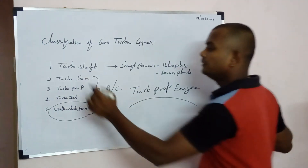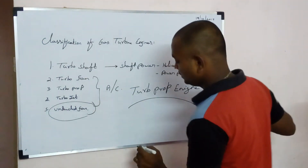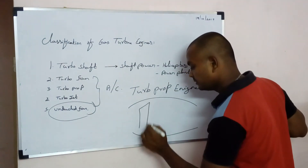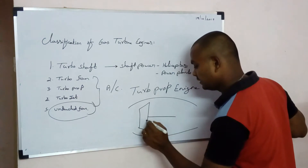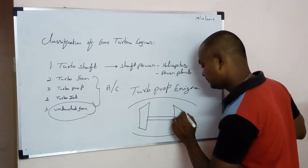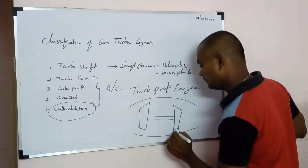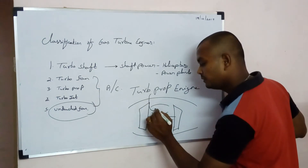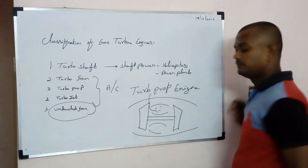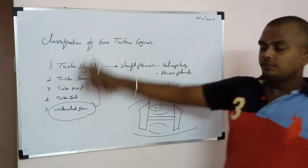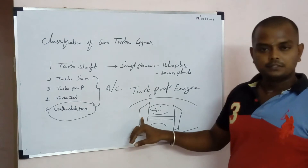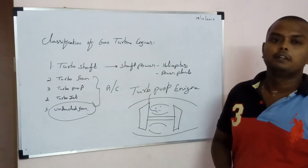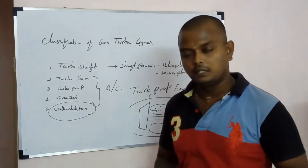For all gas turbine engines, the components inside will be the same. First will be your compressor, connected with your turbine, and between them you will have a combustion chamber. In this combustion chamber you inject fuel. So for all engines, the component layout will be: compressor, combustion chamber, turbine.